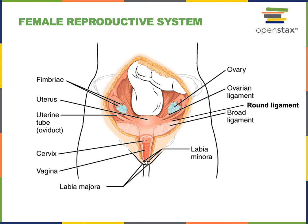The vagina is a muscular tube connecting from the vulva into the uterus, and the inner lining of the vagina is a mucous membrane with a stratified squamous epithelium. The uterus is a pear-shaped organ, and the region of the uterus that connects with the vagina is known as the cervix.